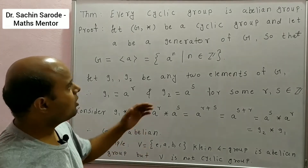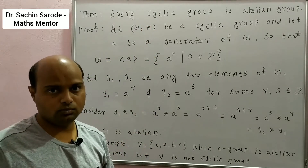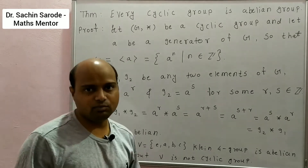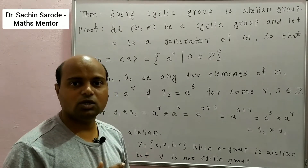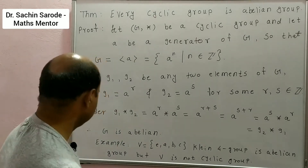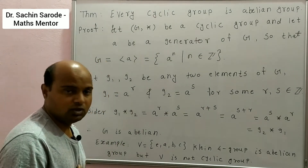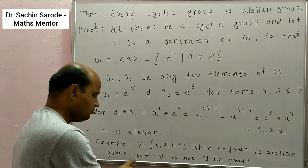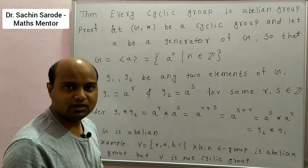Note that the converse of this result need not be true. That means we have an example of an abelian group which is not a cyclic group. The example is V, the Klein 4-group. The Klein 4-group is an abelian group, but V is not a cyclic group.